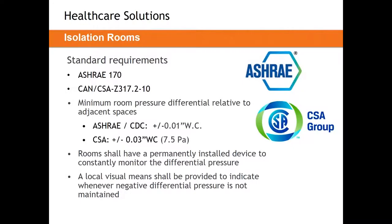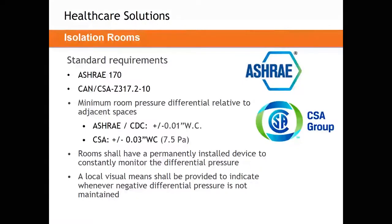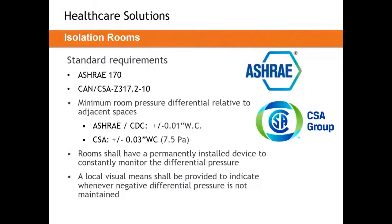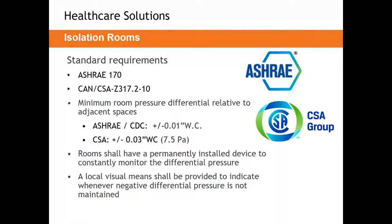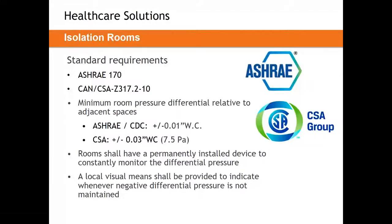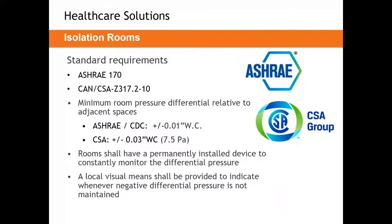For all three space types, we look at ASHRAE 170, which has very similar requirements. We need plus or minus 0.01 inches of water — negative for AII rooms, positive for PE rooms. The CSA standard requires 0.03 inches, a higher pressurization level required in Canada. Isolation rooms are among the only ones mandated to have a permanently installed device to constantly monitor differential pressure, along with a local visual and audible alarm when pressures aren't maintained.